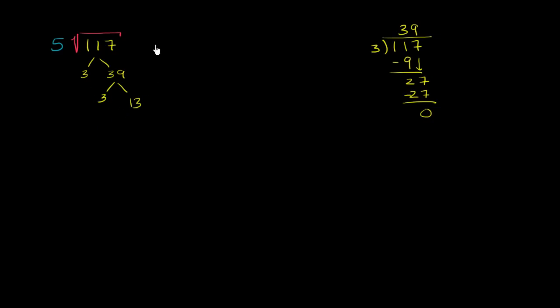And then all of these are now prime numbers. So we could say that this thing is the same as 5 times the square root of 3 times 3 times the square root of 13.